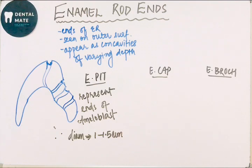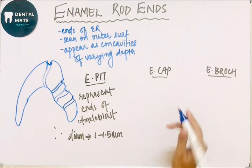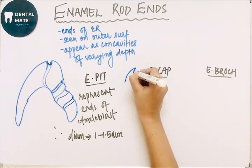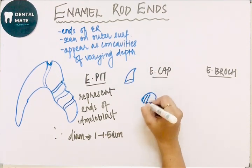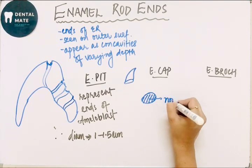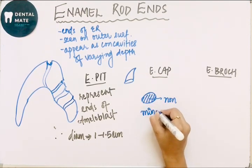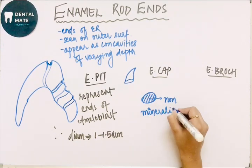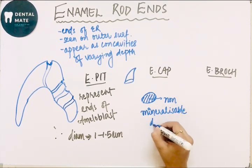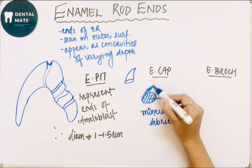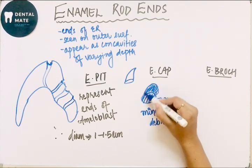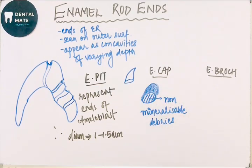Next is the enamel cap. Enamel cap is formed due to enamel deposition on non-mineralizable debris — meaning an enamel cap is being formed. If there is any non-mineralizable debris whose mineralization cannot occur, and enamel deposition and mineralization happen over it, then it is known as enamel cap.